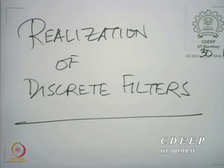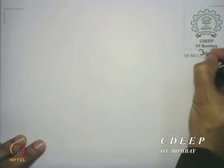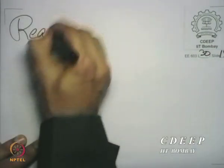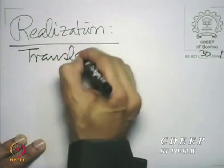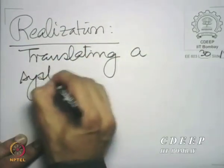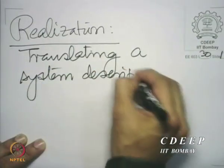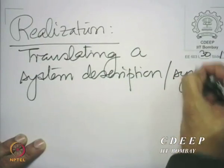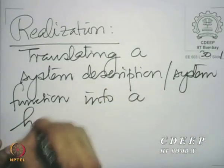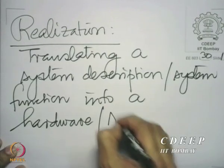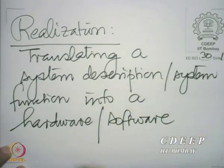Realization means translating a given system function — or more broadly, a system description — into a hardware or software setup.